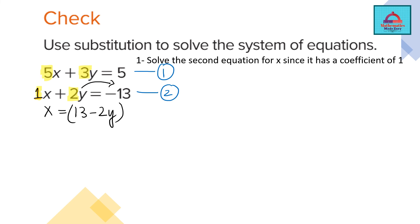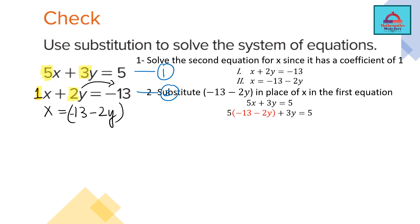We solve the second equation for x since it has a coefficient of 1, giving x = 13 − 2y. Substituting into equation 1 and applying the distributive property, we multiply term by term to get −65 − 10y + 3y = 5. Collecting like terms gives −7y.